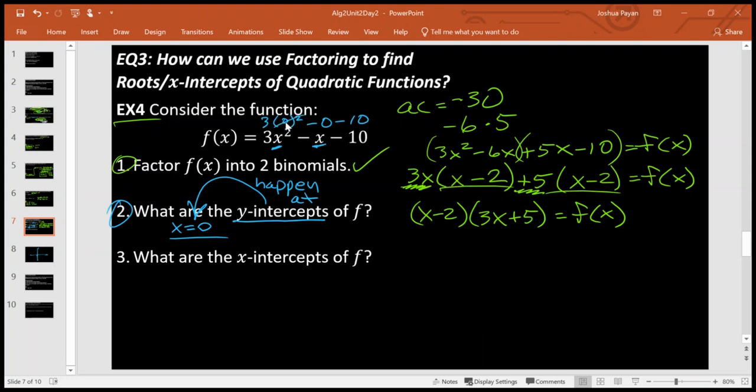0² is 0 times 3 is 0 minus 0 is 0. I'm left with just a negative 10. So that means my y-intercept happens at negative 10. Okay, we're going to hang on to that. It's going to help us draw our picture.